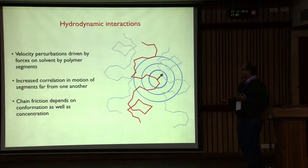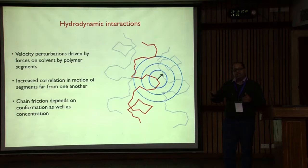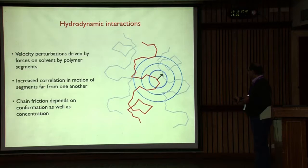We know what hydrodynamic interactions are: if you take a polymer molecule, a segment is constantly moving around, exerting a force on the fluid around it, and therefore velocity perturbations are propagated by the fluid. This leads to a coupling of the dynamics of any one segment to all those segments around it — there are correlations in behavior between this segment and all those around it because of these velocity perturbations.